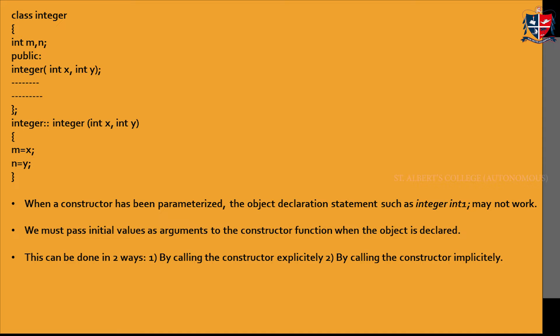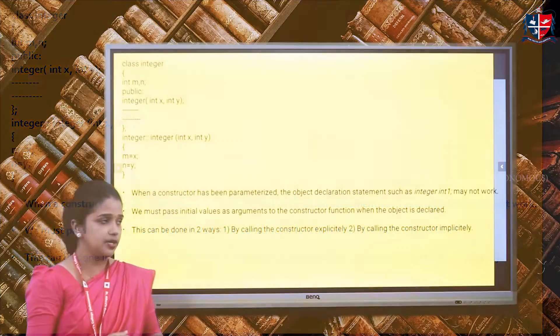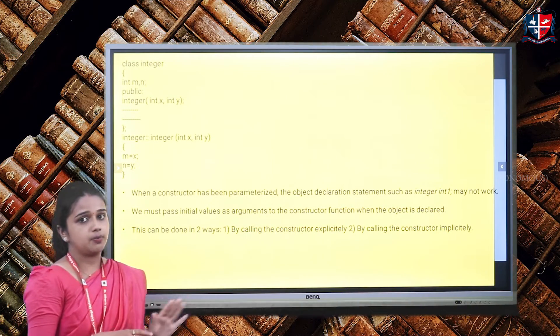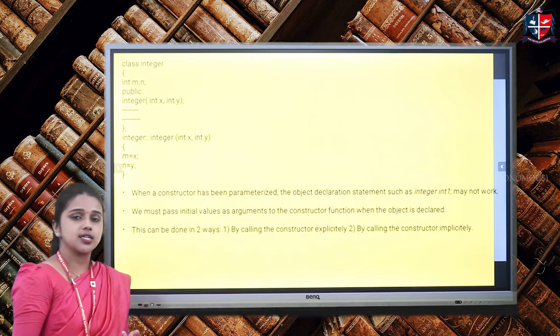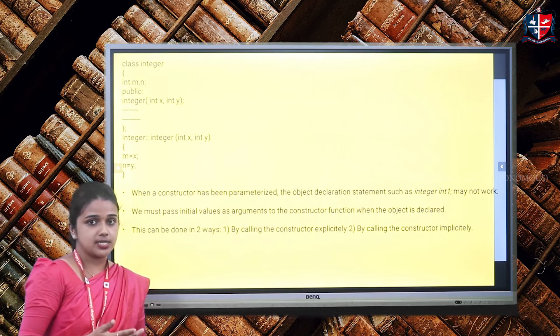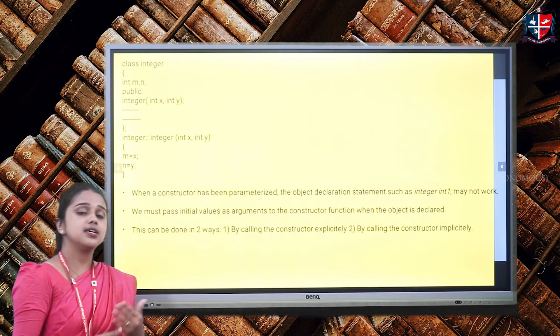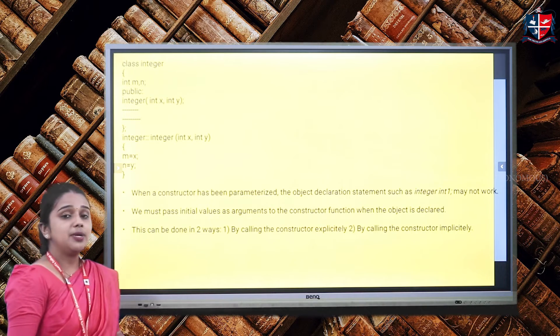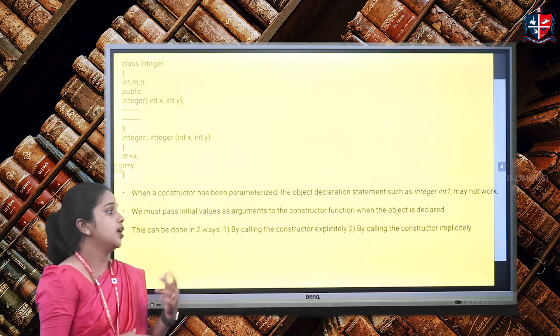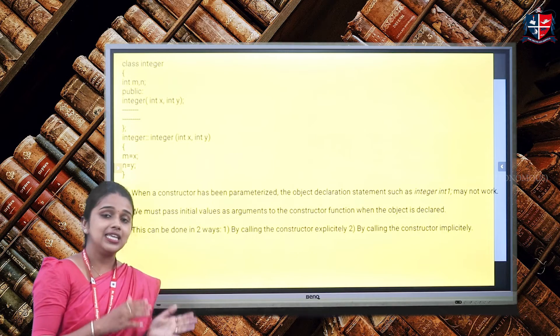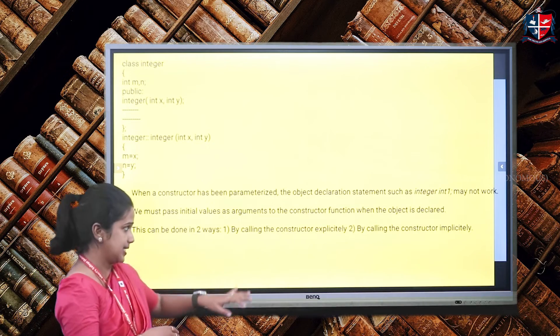When a constructor has been parameterized, the object declaration works differently. In the previous default constructor case, we created the object integer int1 and the constructor was automatically invoked. But in this case, we have to pass the initial values to the constructor when the object is declared. This can be done in two ways: first by calling the constructor explicitly, and second by calling the constructor implicitly.